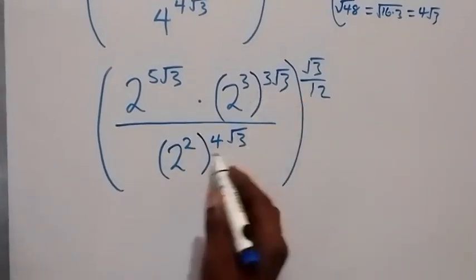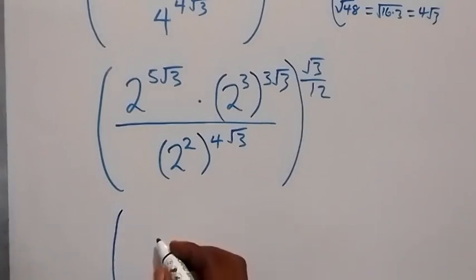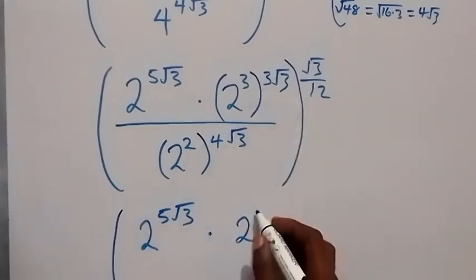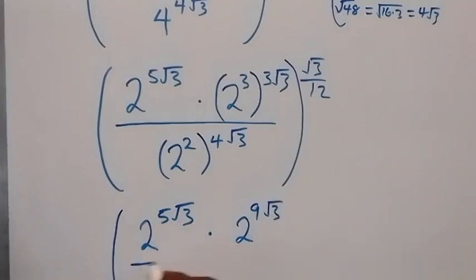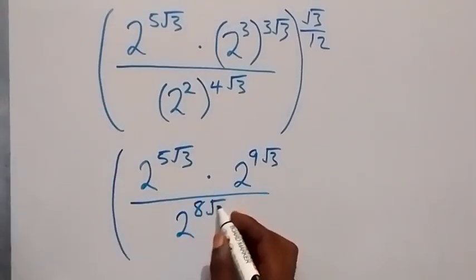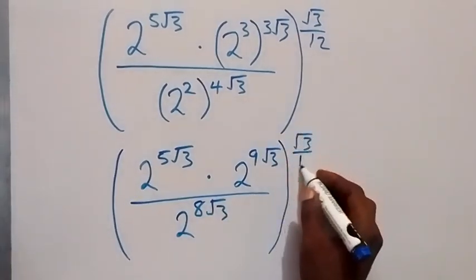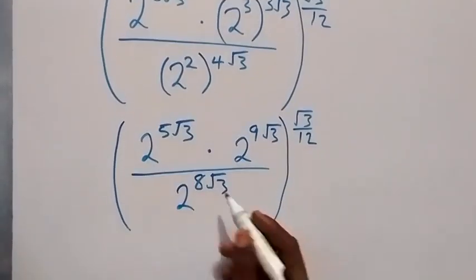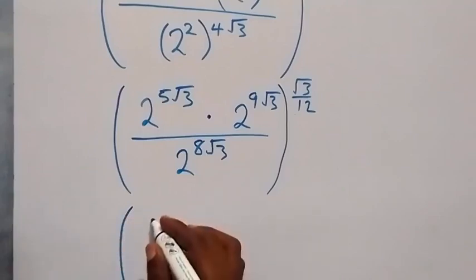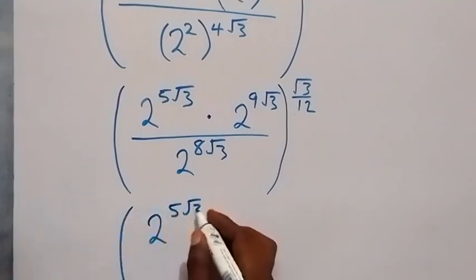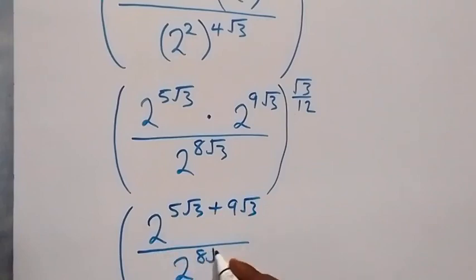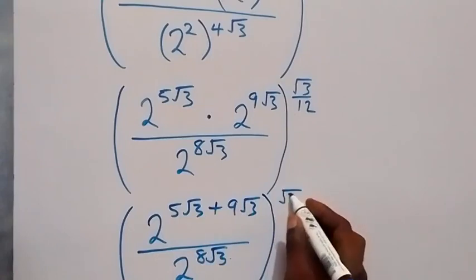We open this power from the law of indices. This becomes, in brackets: 2 raised to power 5 root 3, times — this power multiplies — 2 raised to power 9 root 3, then divided by 2 raised to power 8 root 3. This is all raised to power root 3 over 12. Since same base is multiplying, we can combine the powers: 2 raised to power 5 root 3 plus 9 root 3, divided by 2 raised to power 8 root 3, all raised to power root 3 over 12.